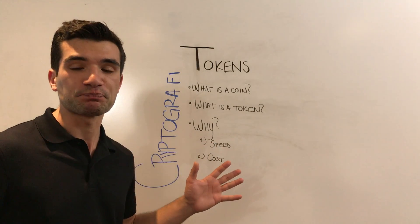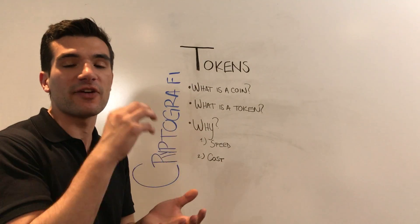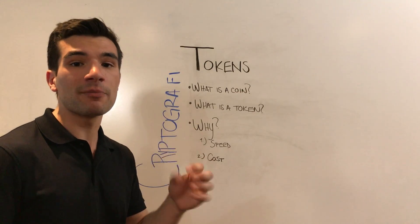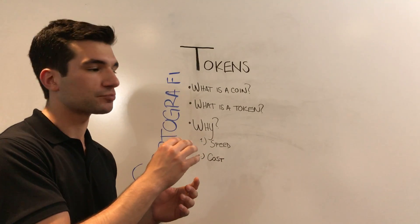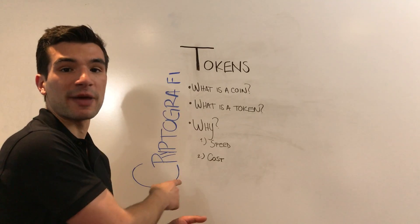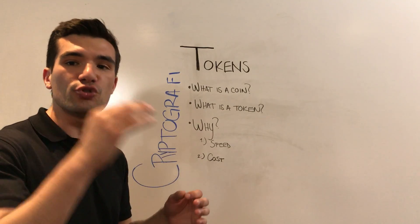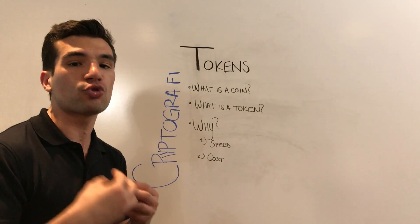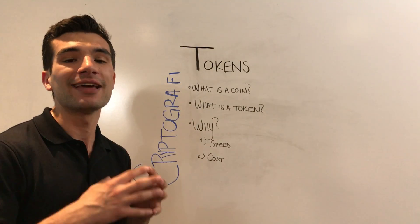And a token is something that exists on top of an existing coin or blockchain. For instance, Ethereum has these dApps — distributed apps — that exist on their blockchain. And it would be, one, very slow, and two, very expensive for all of the small computations that you need to use that app on Ethereum to be done using ETH. So instead, you create a token that represents ETH while you're using that dApp.